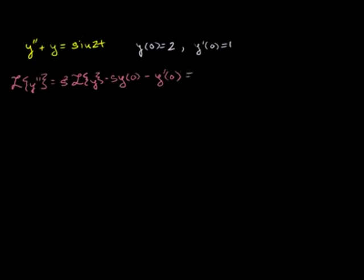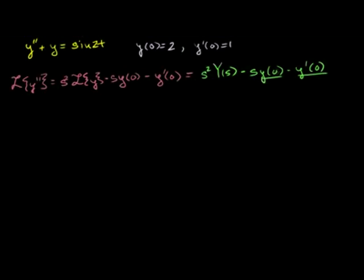We can also rewrite this — this is just a notational issue. Instead of writing the Laplace transform of y all the time, we write it as s squared times capital Y of s, because this is going to be a function of s, not a function of t. So: s squared Y(s) minus s·y(0) minus y'(0). These are numbers — the function or its derivative evaluated at 0.